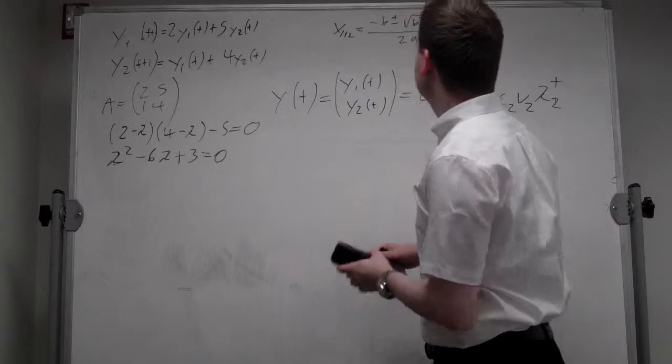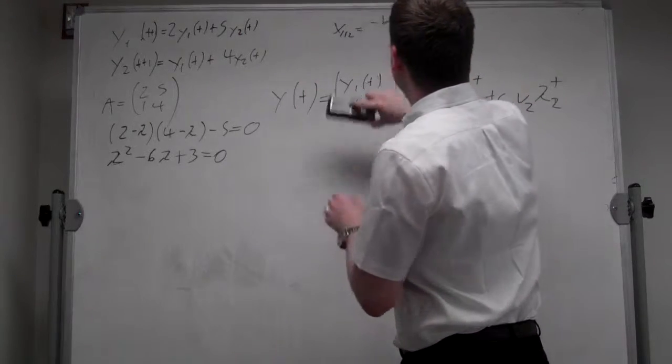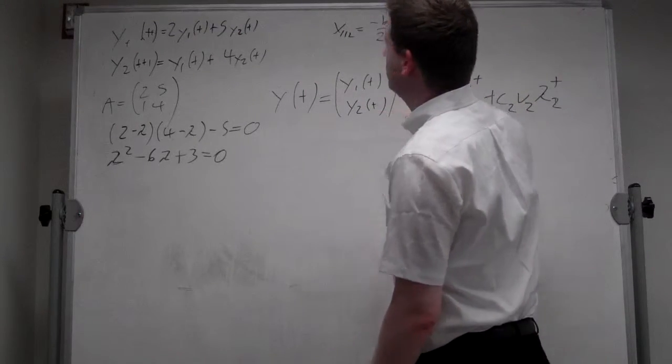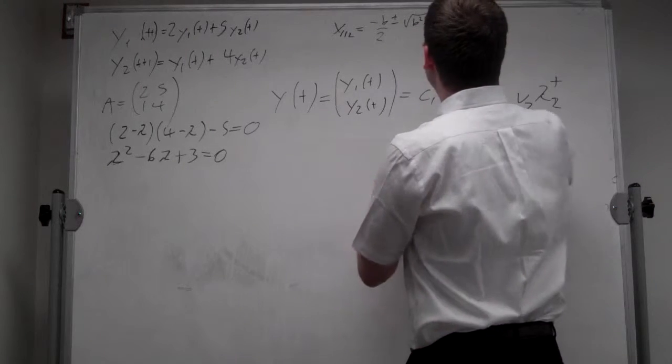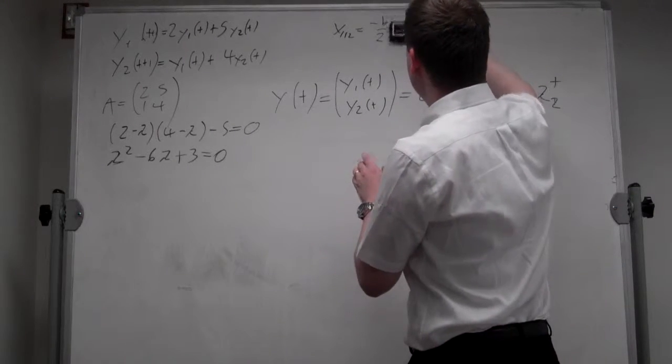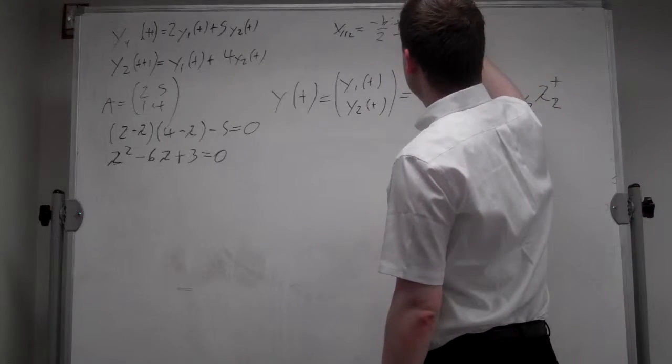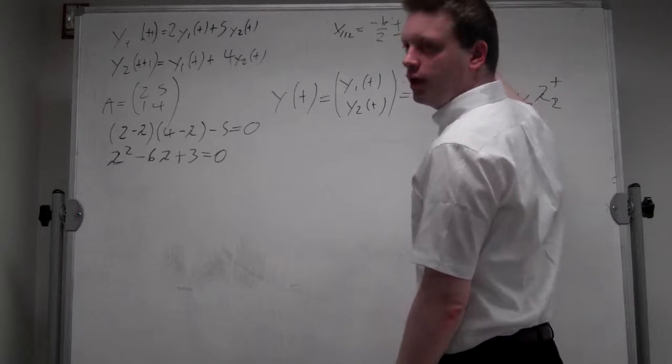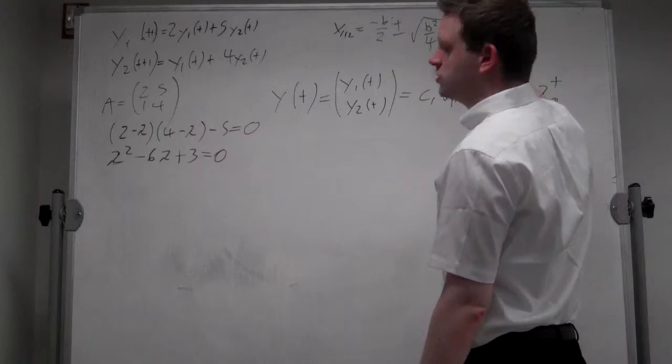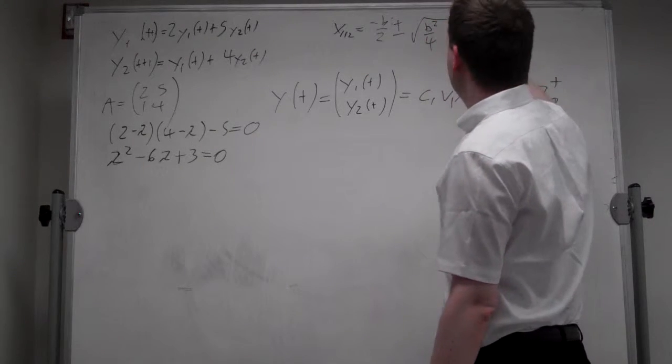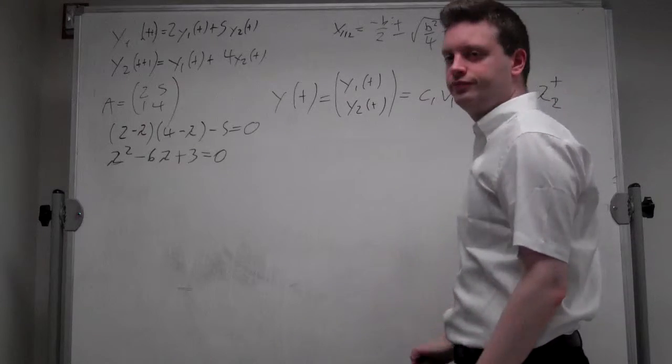Now in this case, a is equal to 1, so we can simplify it. Minus b halves, and the term in the square root becomes b squared over 4. And here we have minus 4ac, since a is 1 and we divide by 4, it's just minus c.